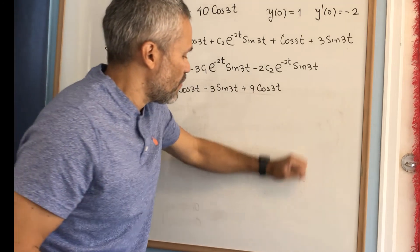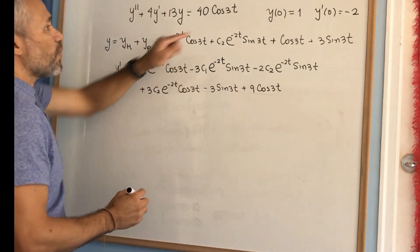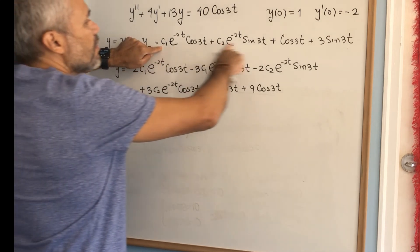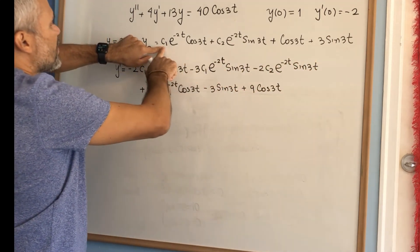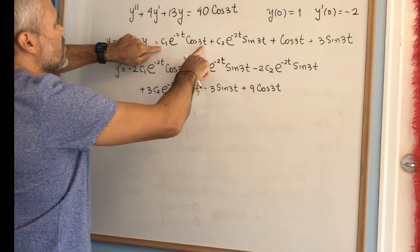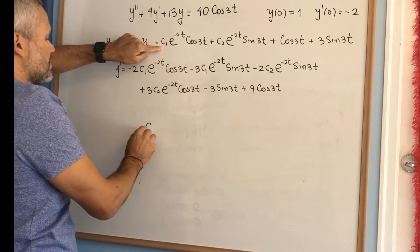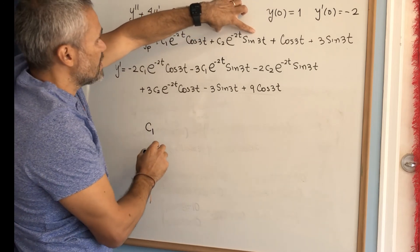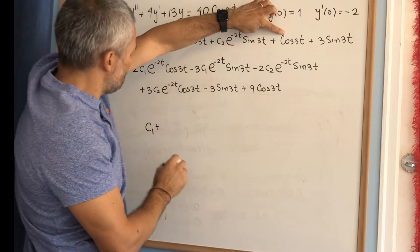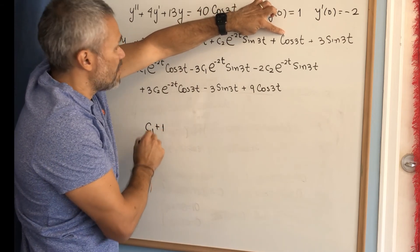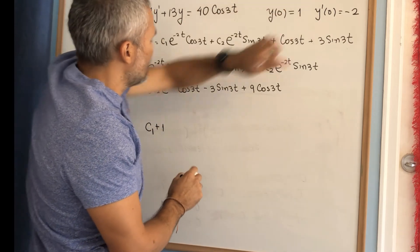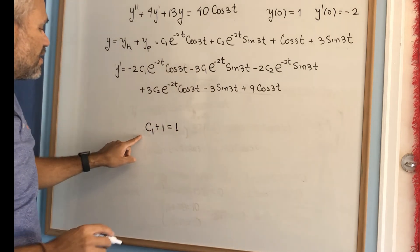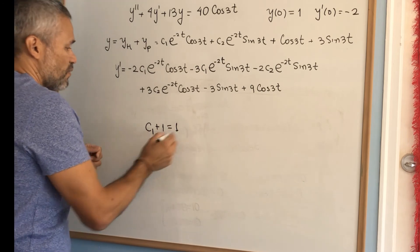Setting y(0) = 1: since e^0 = 1, cos(0) = 1, sin(0) = 0, we get c1 + 1 = 1, therefore c1 = 0.